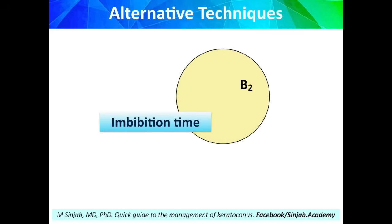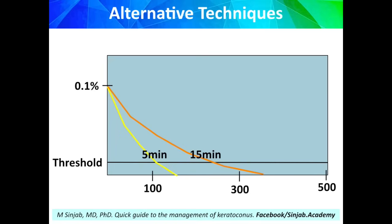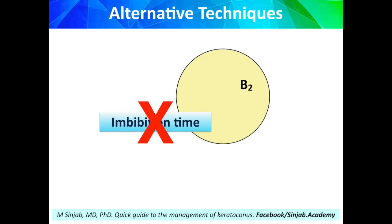Starting with imbibition time: it has been shown that if we use 0.1% riboflavin for five minutes, penetration will be only about 110 microns — very superficial. If we use it for 15 minutes, it will penetrate to about 250 microns — still superficial. But if we use 30 minutes, penetration will exceed 300 microns but stay under 400. So there is no way to reduce the imbibition time with this type of riboflavin.